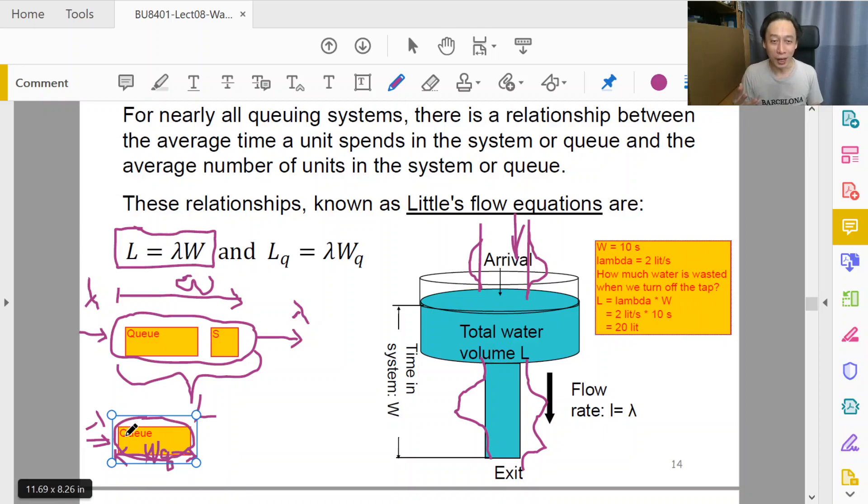So Little's Law is asking, what's the average entities trapped in the enclosure? But that's what we think of as the queue size, queue length in queuing theory.